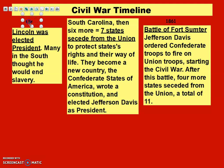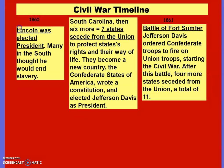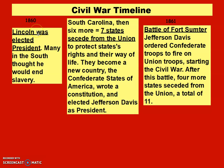So, the Civil War timeline. In 1860, Lincoln was elected president — that's the first thing you want to add. Many in the South thought that he would end slavery. Also in 1860, South Carolina and then six more — so seven states — seceded from the Union.